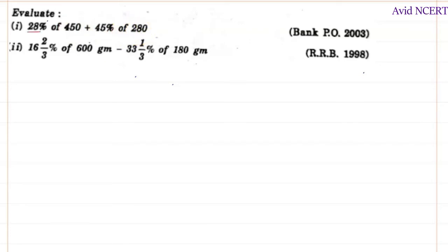First step is to find 28% of 450, and then we have to find 45% of 280, and then add both together. So first step, 28% of 450. To find this, what we can do is...